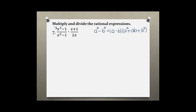Using this formula to factor the difference of cubes, we start with x minus 1, where x is my a and 1 is my b, and then x squared plus a times b which is x times 1, so just x, and plus b squared which is 1 squared, which equals 1.